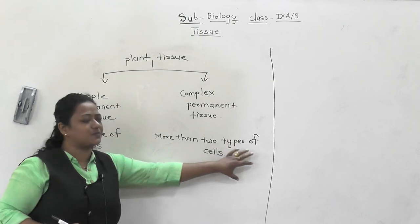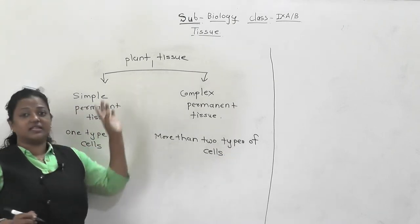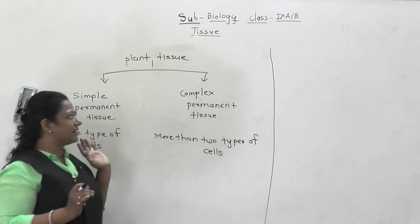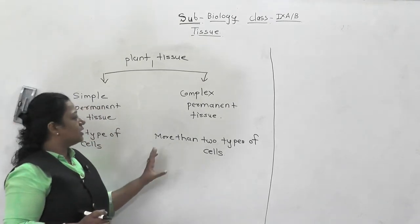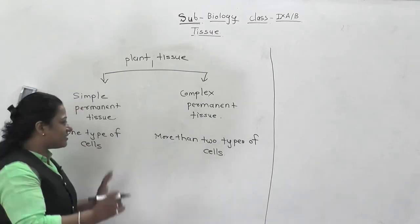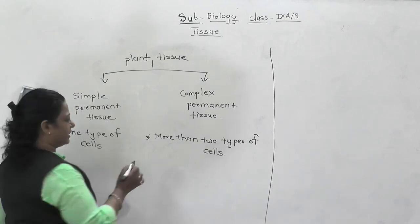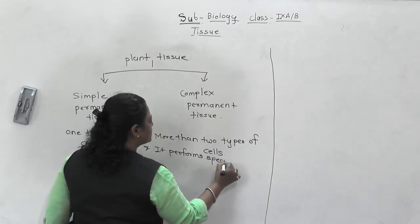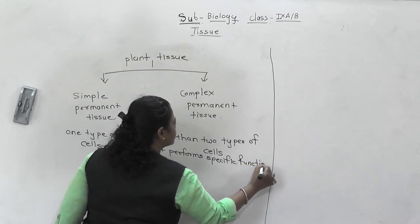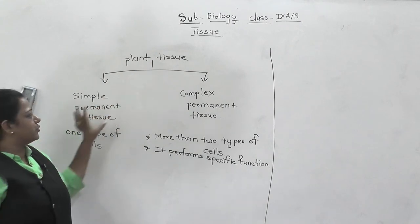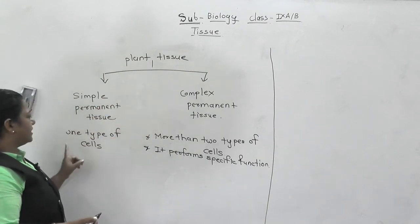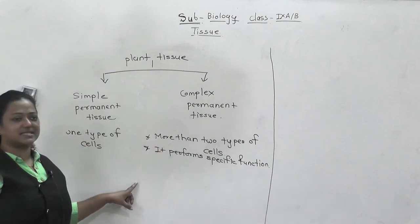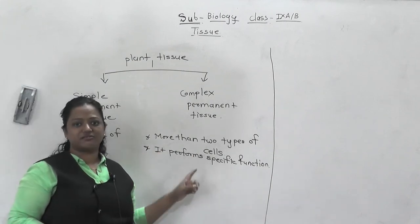We have seen the definition of tissue - tissue is a group of similar cells that perform a specific function. But here is a little difference: in complex permanent tissue, it is made up of more than two types of cells, yet the interesting thing is that it still performs a specific function.